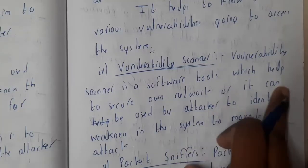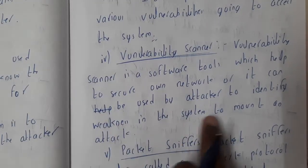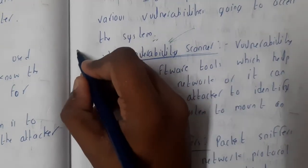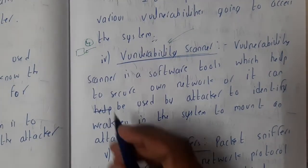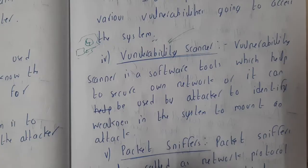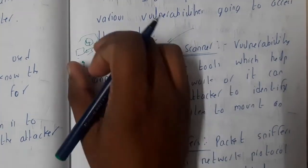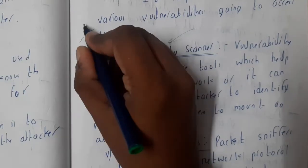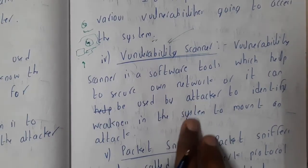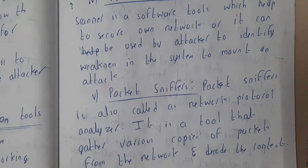The fourth tool is the vulnerability scanner. It is a software tool that helps secure a network, or can be used by an attacker to identify weaknesses in order to mount an attack. For example, it can detect a very weak four-digit password. A system using brute force can crack such a password within hours. If the company identifies this vulnerability, they can require a longer, more complex password. If an attacker finds it, they can brute force their way in.